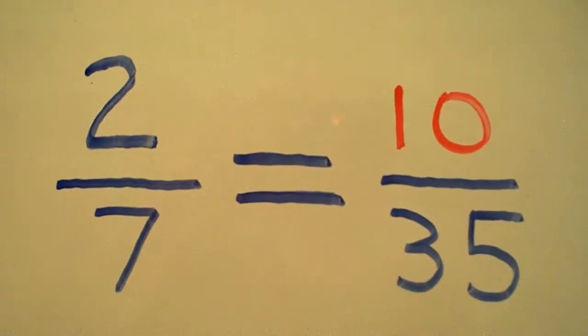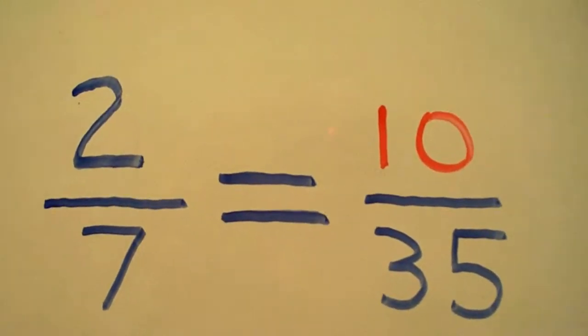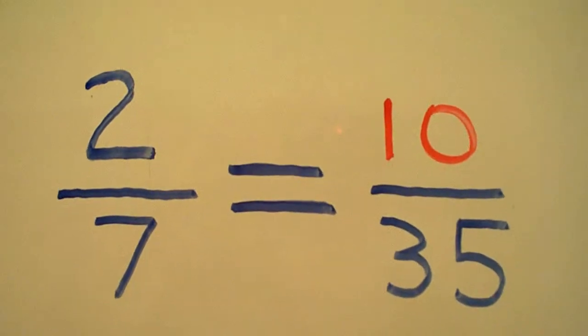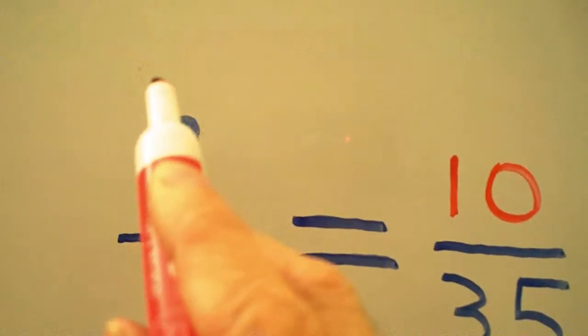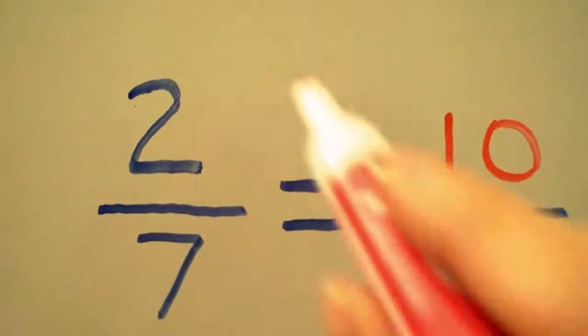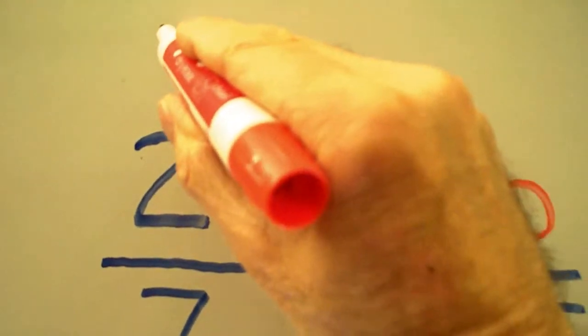If we want to check our work to make sure we've created a true proportion, all we have to do is cross-multiply. We start at the top left, multiply our 2 with our 35 to get 70.